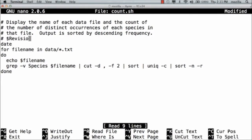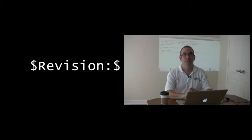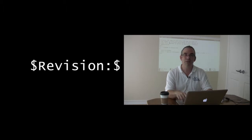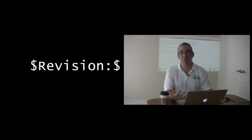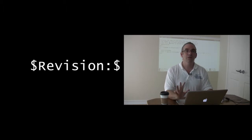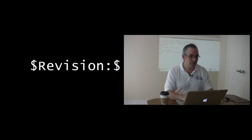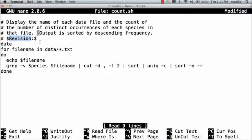The string is $Revision: $. It can be in a comment or in a string variable. All that matters is that it's a dollar sign, the word Revision with a capital R, a colon, and then a dollar sign.